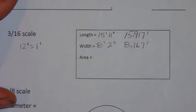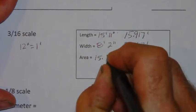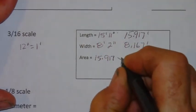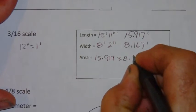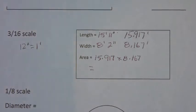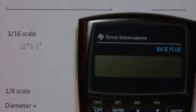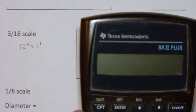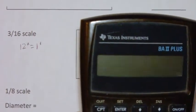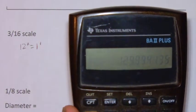Now you can multiply these two numbers to determine the area. 15.917 times 8.167 equals 129.99 square feet.